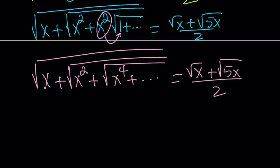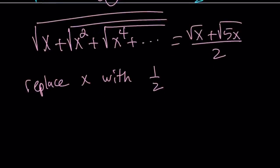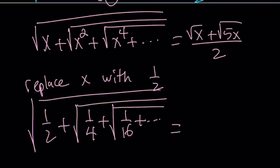Why did we do all of this? Because our expression starts off with 1/2 inside the radical, and then it's squared and squared again. So in this case, we can replace x with 1/2. Think of it like a function or infinite series — just replace x with 1/2 everywhere. Then the left side becomes the square root of 1/2 plus the square root of 1/4 plus the square root of 1/16, so on and so forth — which is exactly what we're looking for. On the right-hand side, replacing x with 1/2 gives us the square root of 1/2 plus the square root of 5/2 divided by 2.